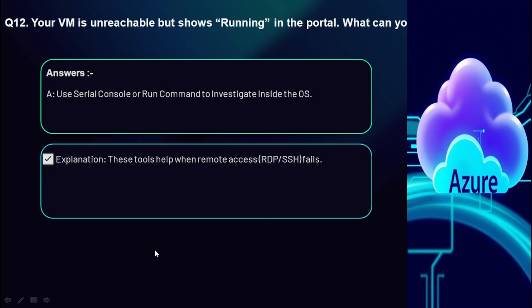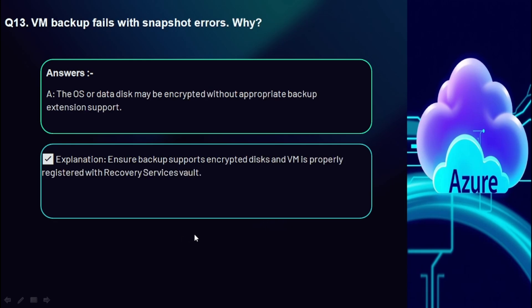Question 12: Your VM is unreachable but shows 'Running' in the portal — what can you try? Use Serial Console or Run Command to investigate inside the OS. Also check boot diagnostics to see whether it's stuck at the boot loader, login screen, or BSOD. These tools help when remote access (RDP/SSH) fails.